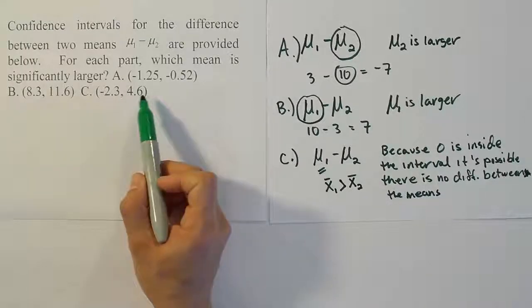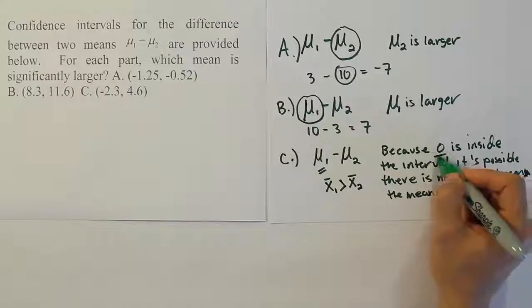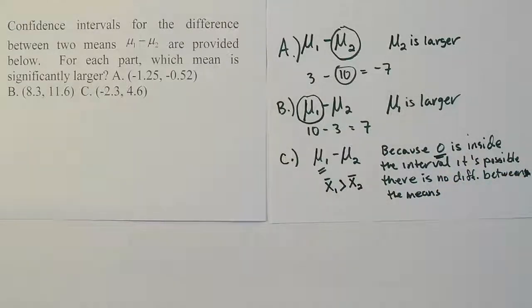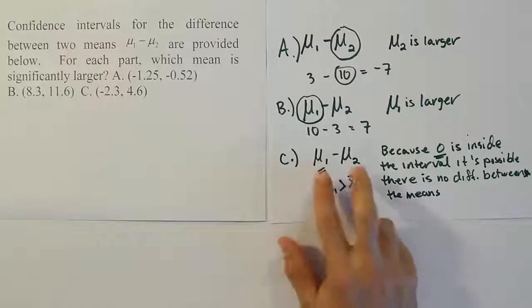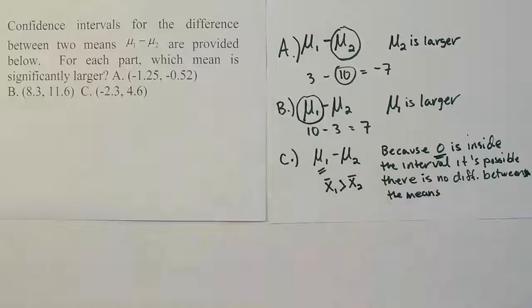But after adding and subtracting the margin of error, we end up having negative and positive numbers in our interval, which means that 0 is included. And if 0 is included, we know that's a candidate for the true population difference between the means. And if that's the case, if it really was 0, we'd be saying there was no difference between the means.